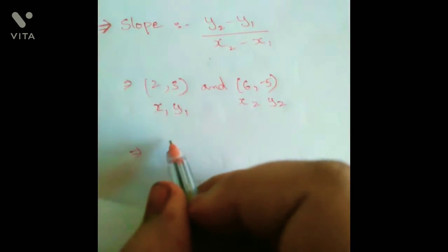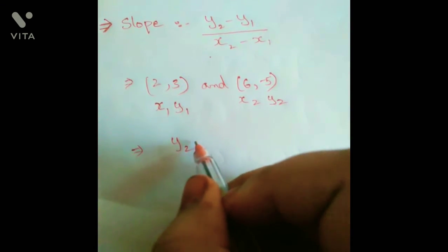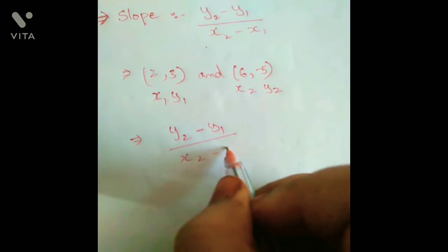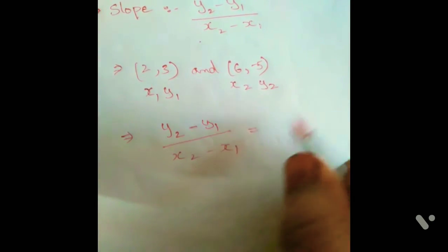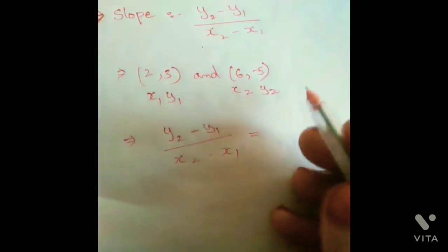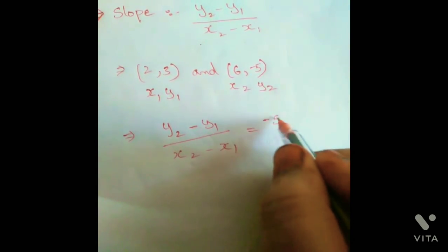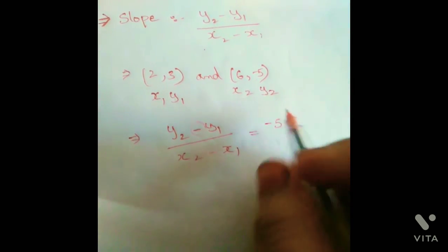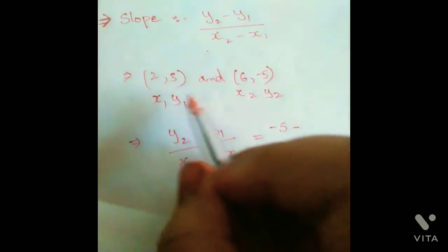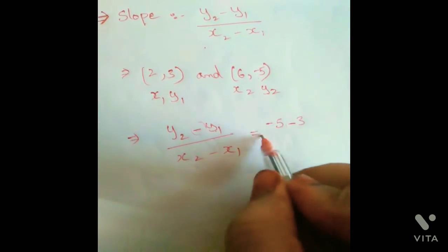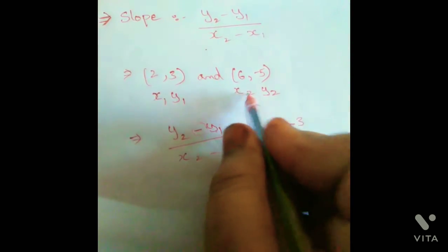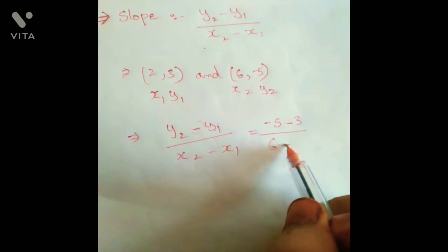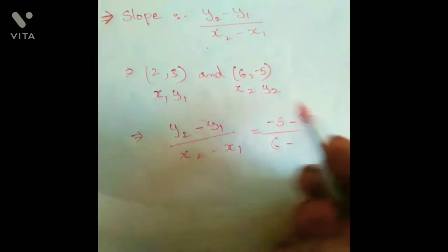First we write the formula: y2 minus y1 by x2 minus x1 is equal to y2 is minus 5, minus, we are writing here, now y1 is 3, by x2 is 6, this minus here, x1 is 2.